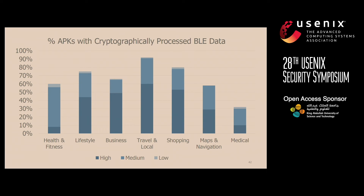We then analyzed results in terms of the Google Play categories the APKs fell under. Interestingly, APKs under the Medical category were some of the least likely to have end-to-end protection for their BLE data — which seems strange, because you would assume they'd be the most likely to have protection. We analyzed a subset of these APKs and found that some, at least, made use of official BLE profiles in which pairing is specified as the only protection mechanism, which could account for at least part of these results.